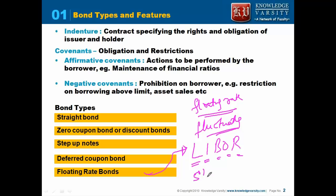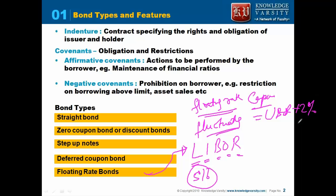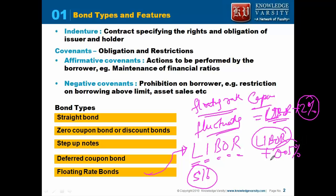For example, if the LIBOR rate is 5%, the bond coupon can be LIBOR plus 2%, meaning the bond will give 2% above the LIBOR rate. Or the coupon can be LIBOR plus 0.5%, meaning whatever the LIBOR rate, the coupon would be half percent above that. That is your floating rate bond characteristic.